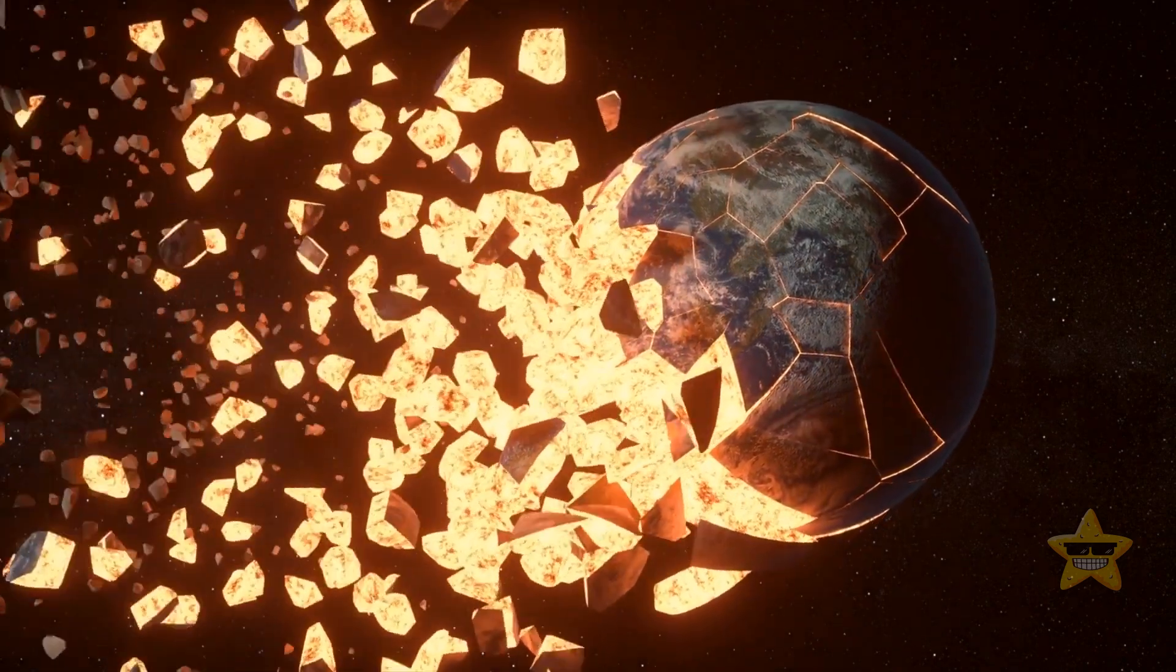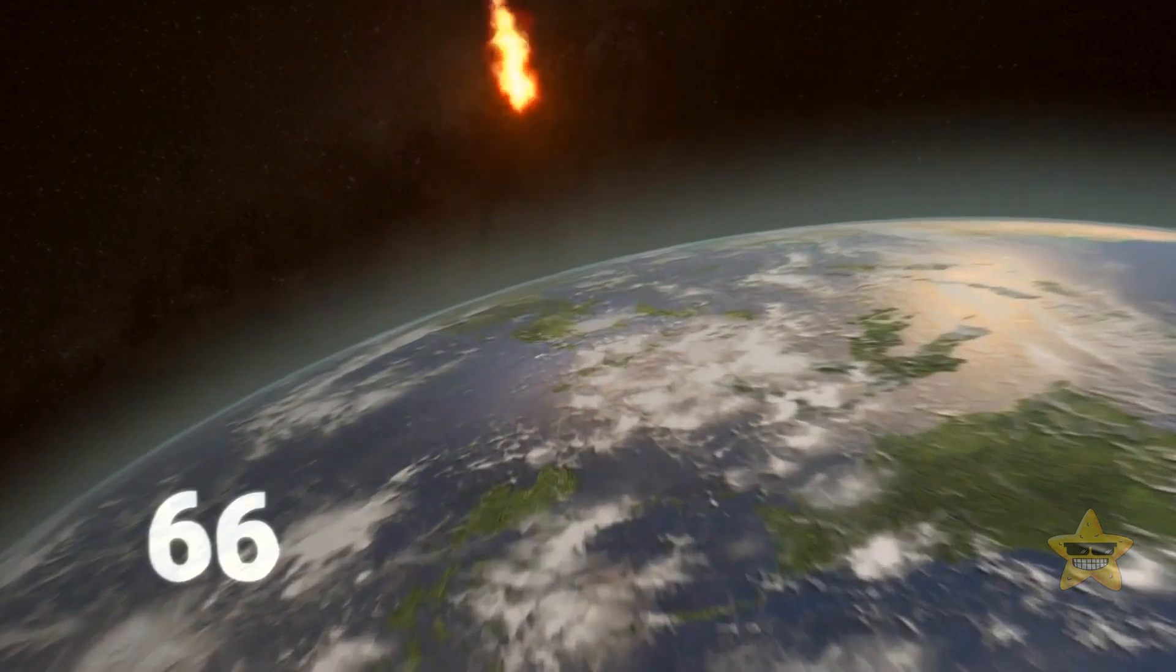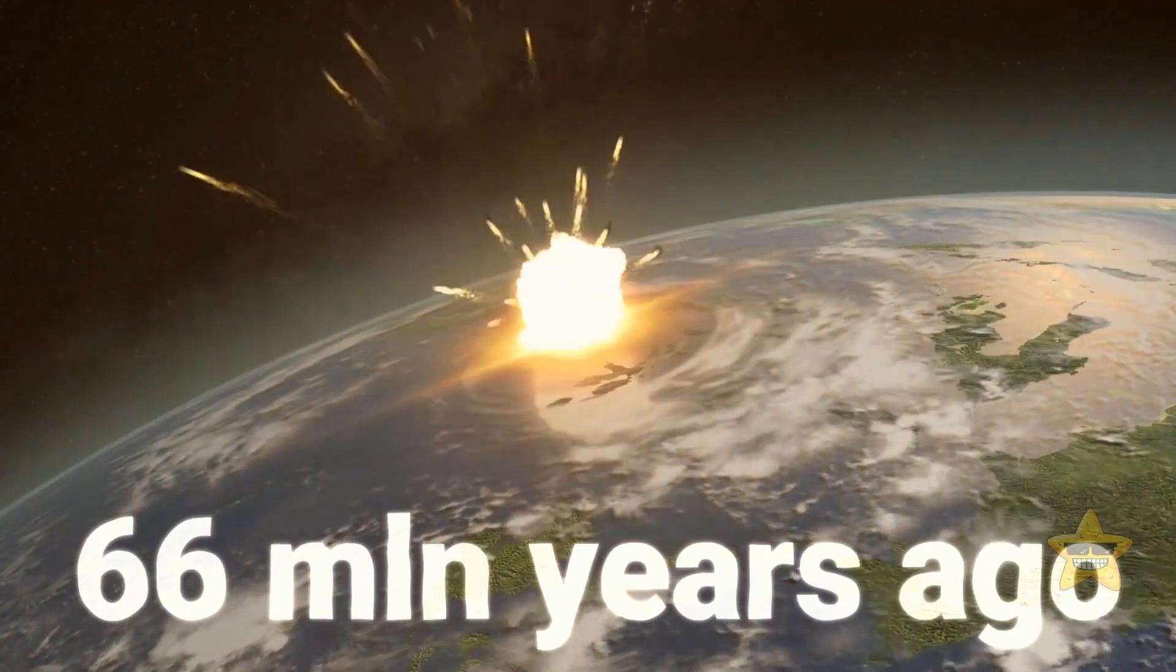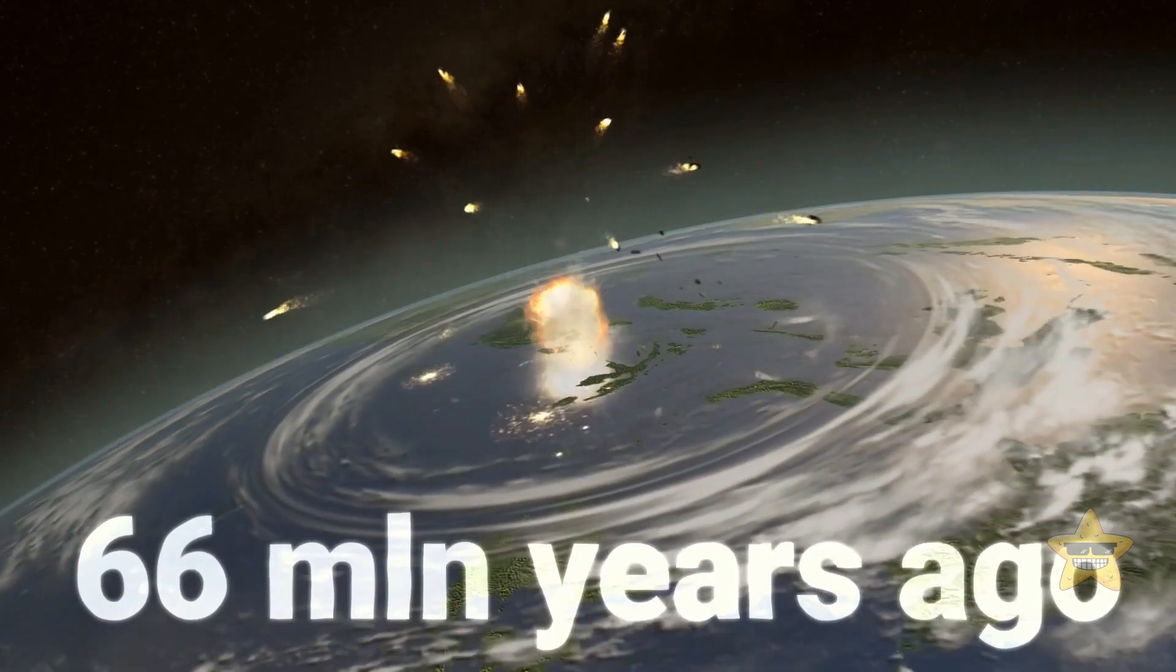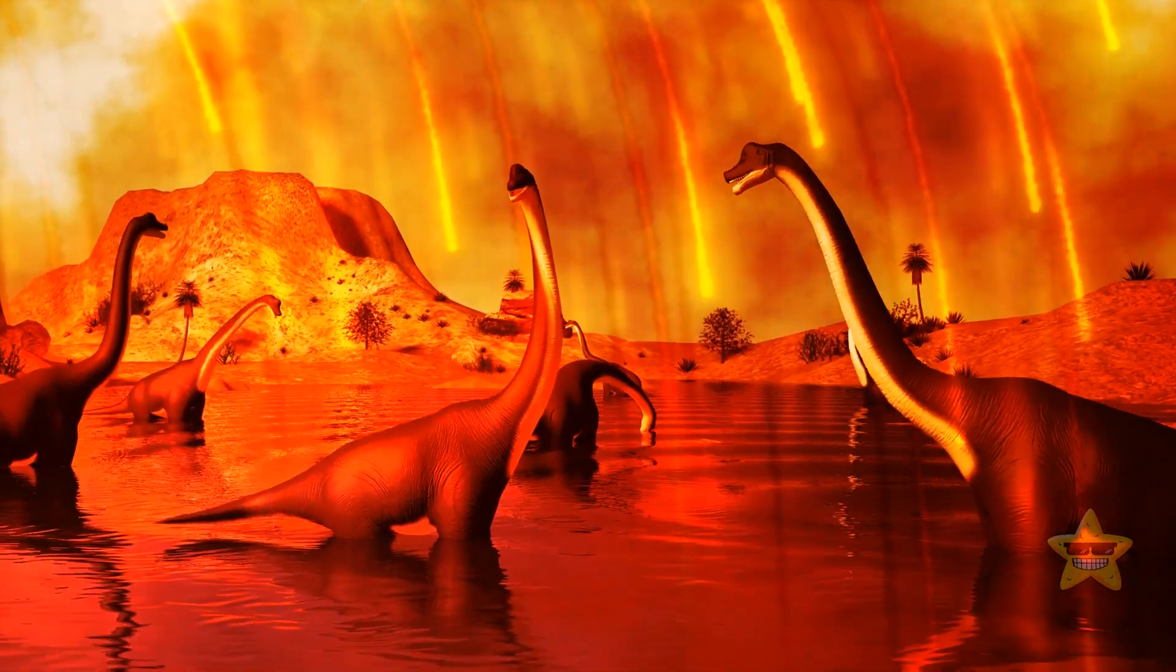Other planets couldn't avoid collisions either, including Earth. You already know what happened 66 million years ago. A giant asteroid triggered changes in climate and erased three quarters of life, including dinosaurs.